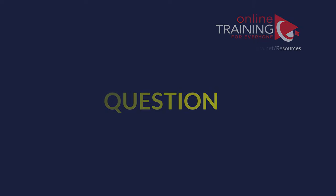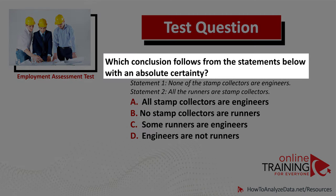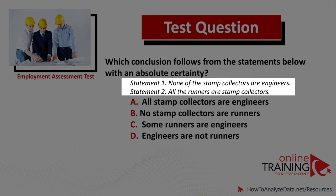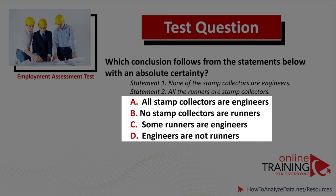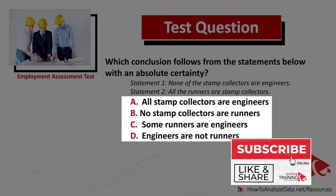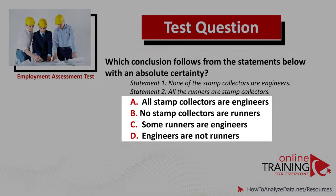A lot of times you might get a question that validates your knowledge of logical reasoning. Which conclusion follows from the statements below with absolute certainty? Statement one: none of the stamp collectors are engineers. Statement two: all runners are stamp collectors. There are four possible choices: all stamp collectors are engineers; no stamp collectors are runners; some runners are engineers; or engineers are not runners.